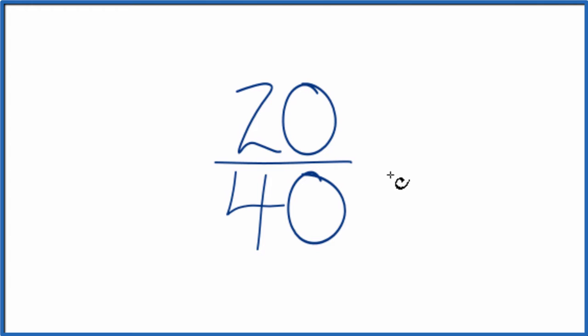And to do that, we need to find a common factor, something that goes into 20 and 40. I can see right away that 10 goes into 20 and 40, and 20 would divide into 20 and 40 evenly as well. But let's start with 10.